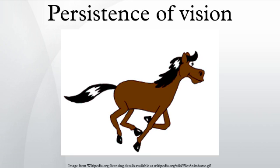Cartoon animation: in drawn animation, moving characters are often shot on twos — that is to say, one drawing is shown for every two frames of film — meaning there are only 12 drawings per second. Even though the image update rate is low, the fluidity is satisfactory for most subjects. However, when a character is required to perform a quick movement, it is usually necessary to revert to animating on ones, as twos are too slow to convey the motion adequately. A blend of the two techniques keeps the eye filled without unnecessary production cost.